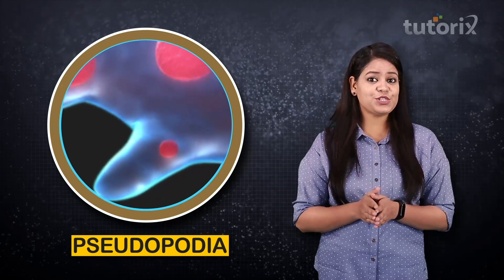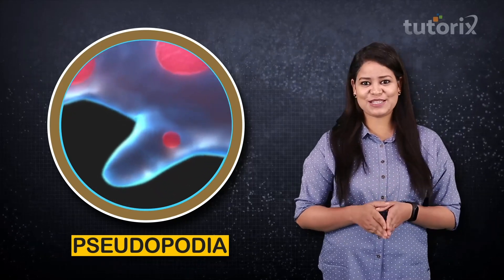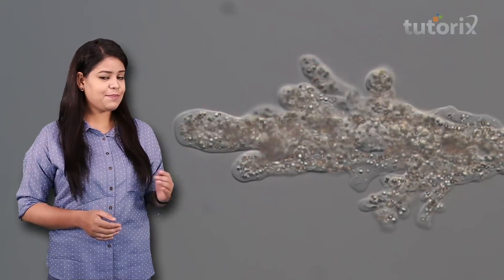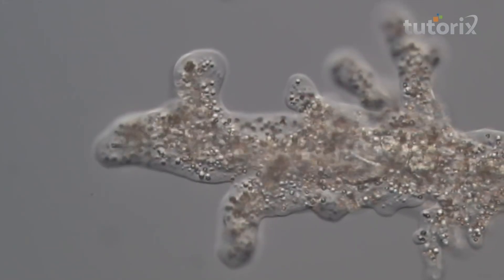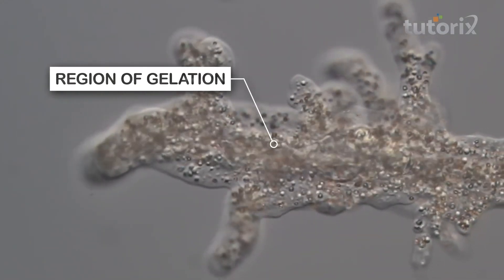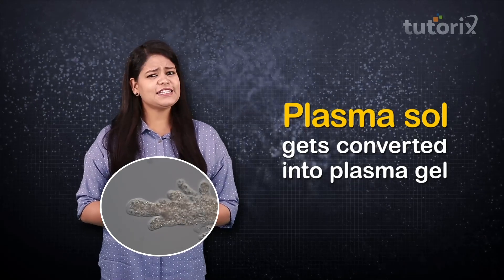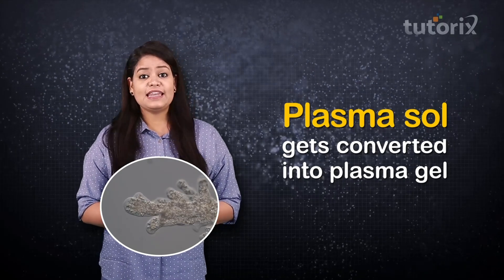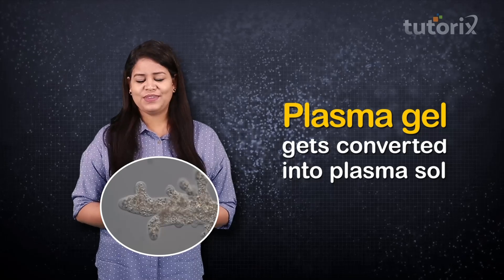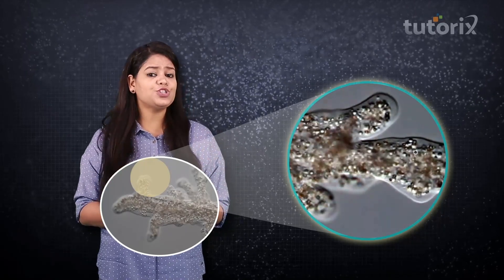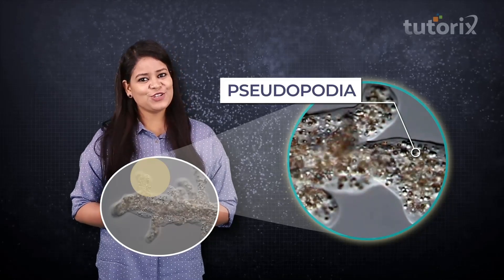The entire process of pseudopodia formation can be summed up in three steps. First, the amoeba attaches to a solid surface called the substratum. Then, the plasma sol of the pseudopodium-forming region starts to gelatinize, converting into plasma gel. Finally, the plasma gel of the opposite end starts converting into plasma sol, which pushes the actual plasma sol in the forward direction, leading to the formation of pseudopodia.